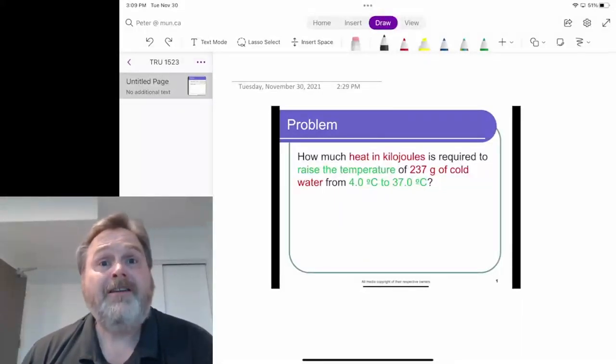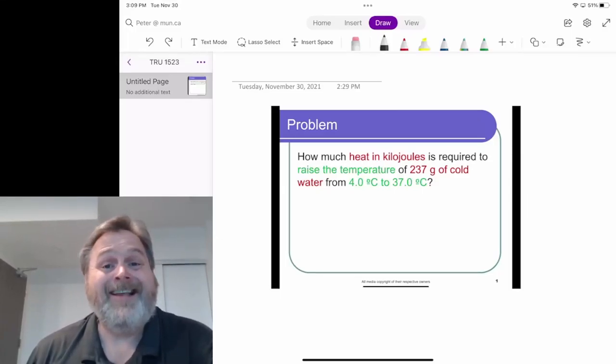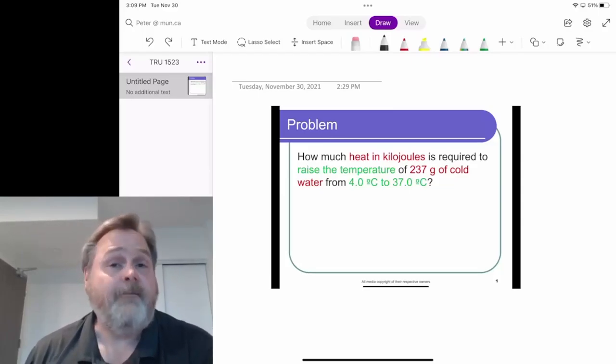In this particular problem, we're going to look at the heat change involved in an everyday occurrence. The problem says: how much heat in kilojoules is required to raise the temperature of 237 grams of cold water from 4.0 degrees Celsius to 37.0 degrees Celsius?